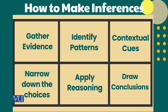Now we will see how we can make an inference. There are a few steps you can follow while applying your reasoning. First, you need to gather evidence. Then, if it is a written piece of work, you need to find contextual cues and look for recurring patterns. After doing these things, you need to narrow down your choices and apply your reasoning, and then you will draw a conclusion.